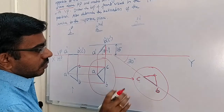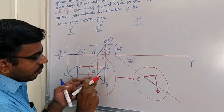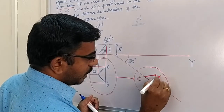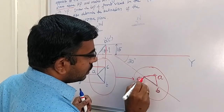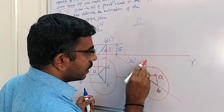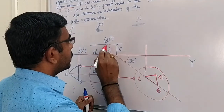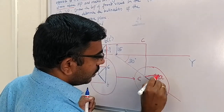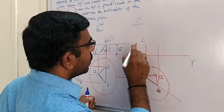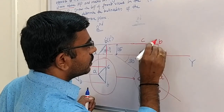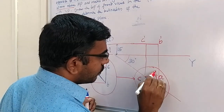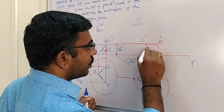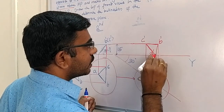Now I want to draw the corresponding front view for the third position. Draw a vertical line from C and a horizontal line from C — that gives point C'. Draw a vertical line from B and a horizontal line from B — that gives point B'. Draw a vertical line from A and a horizontal line from A — that gives point A'. By joining all these points, we get the required front view. This is the procedure to draw all three positions of the given problem.